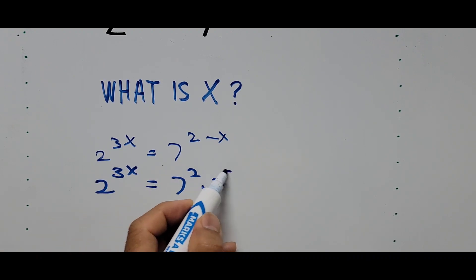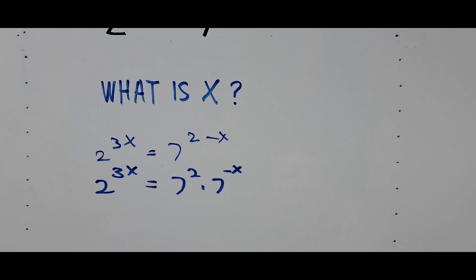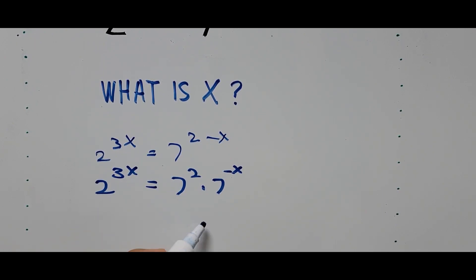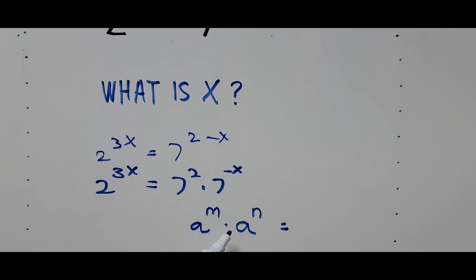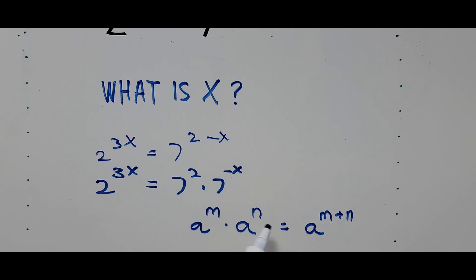We just utilized one of the exponent rules. If we have a raised to m multiplied by a raised to n — the same base with different exponents — we copy the base and add the exponents, resulting in a raised to m plus n.